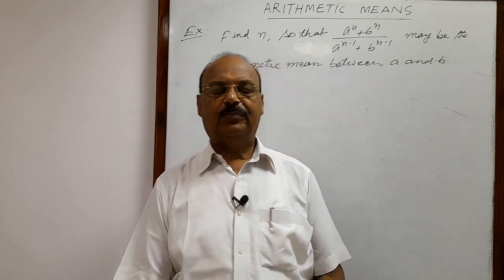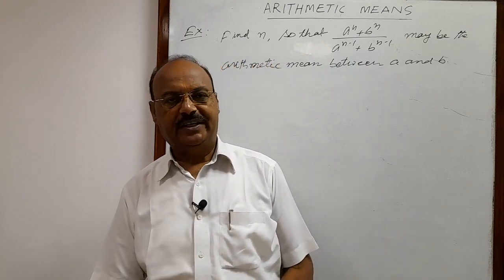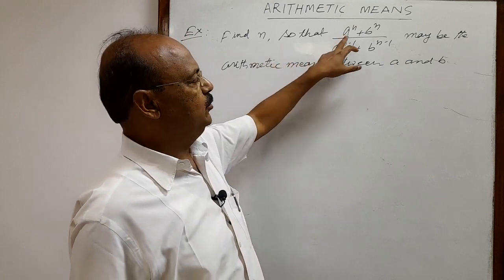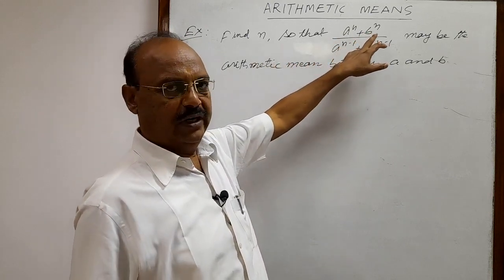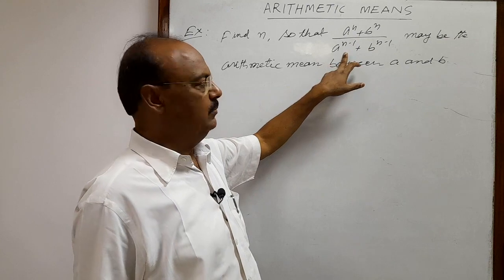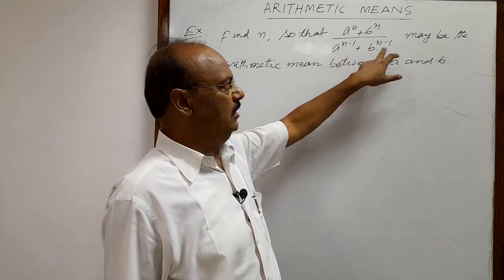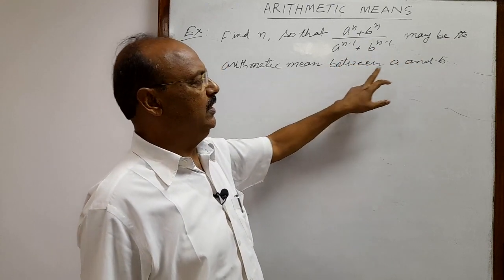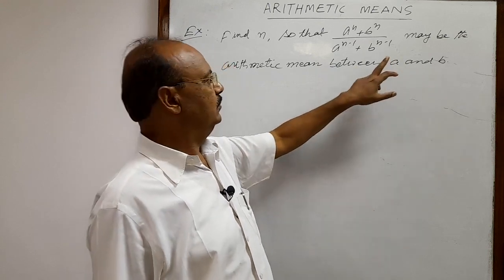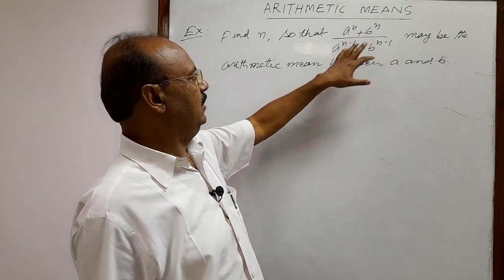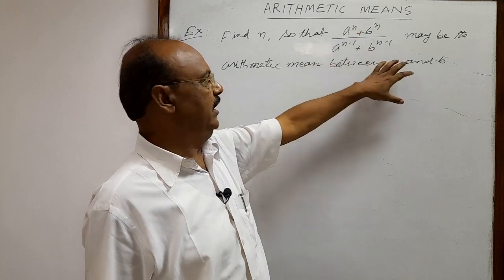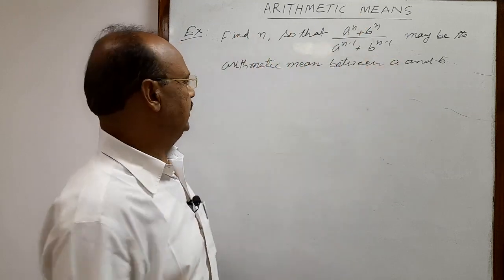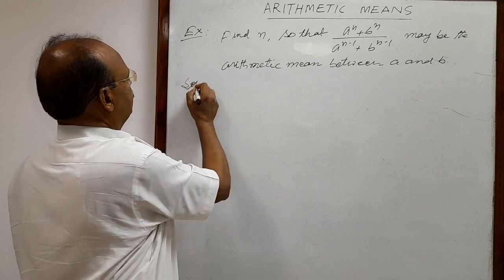Here we will see a question from the topic arithmetic means. The question is: find n so that a to the power n plus b to the power n, upon a to the power n minus 1 plus b to the power n minus 1, may be the arithmetic mean between a and b. So this condition is given and we have to find out the value of n. Let us start the solution — a very interesting question.